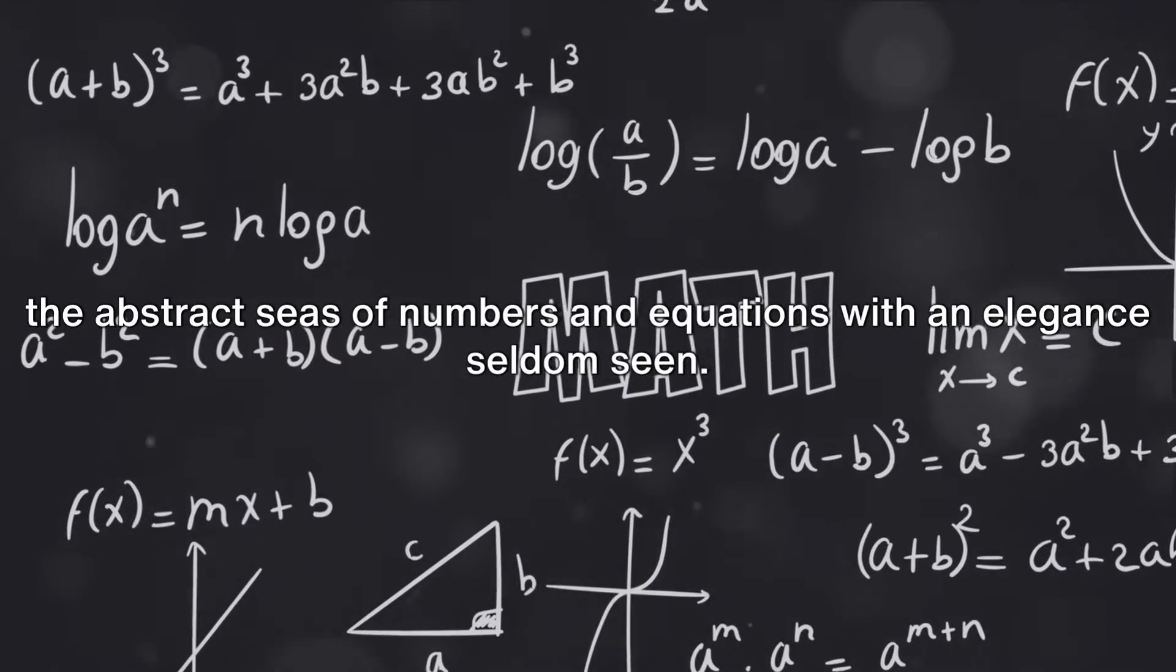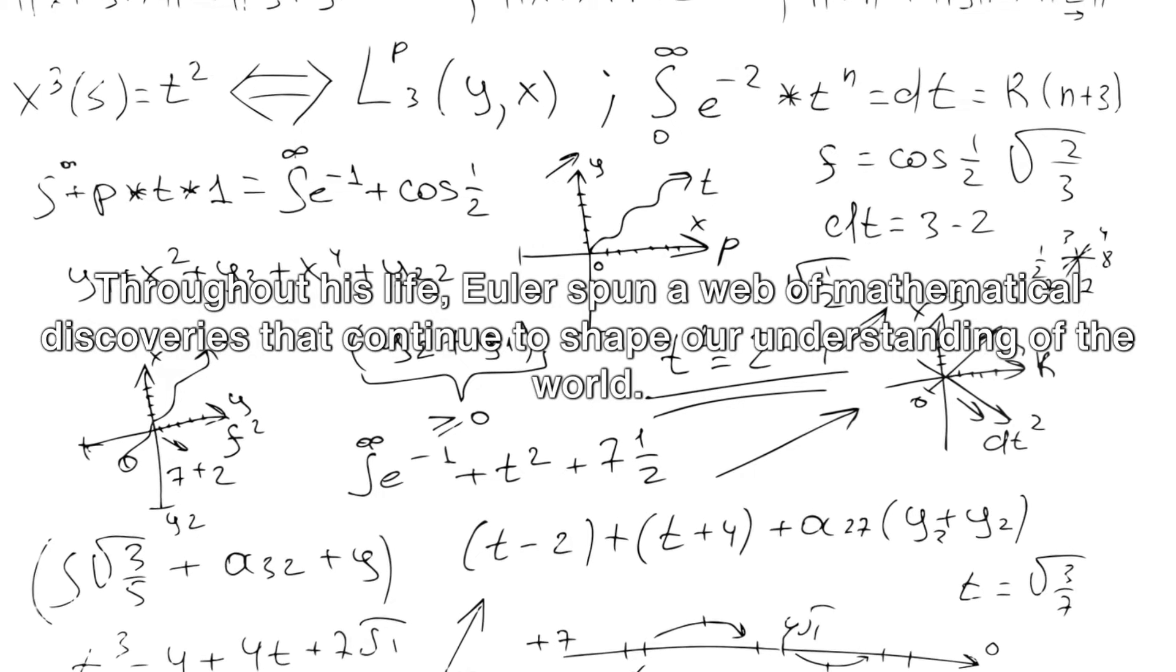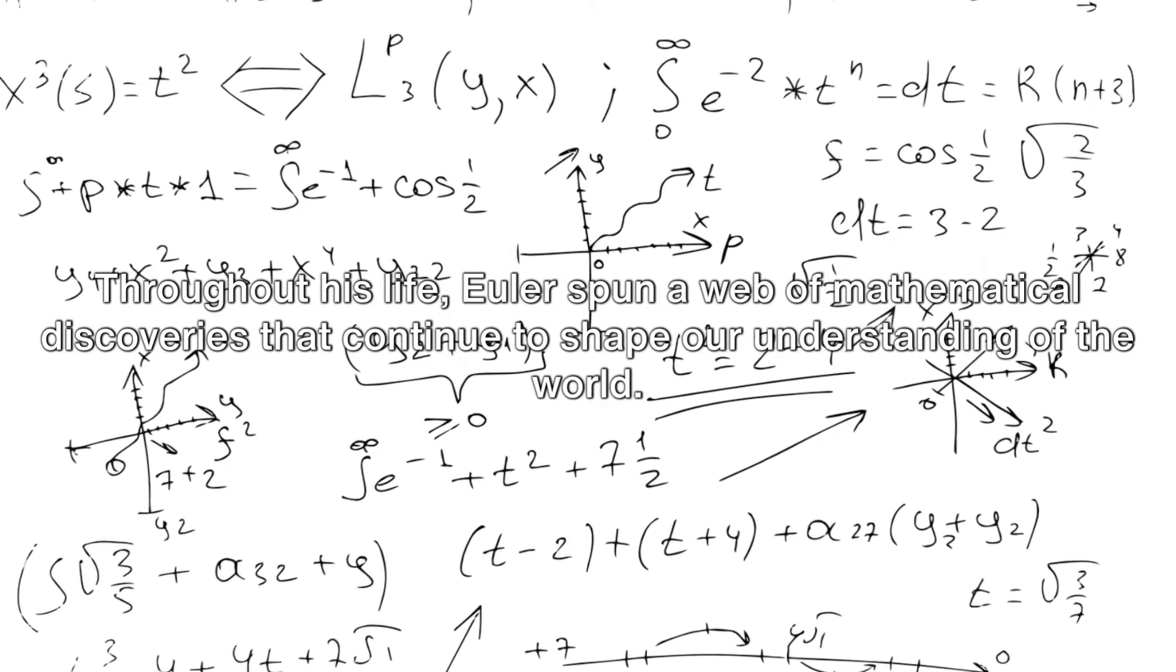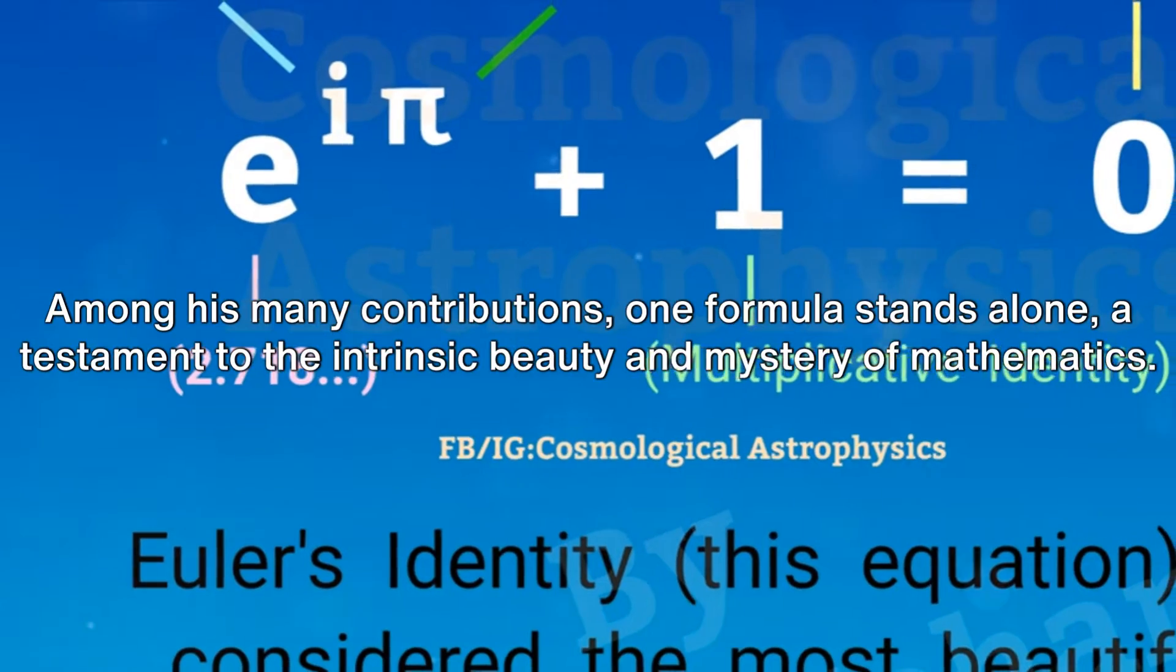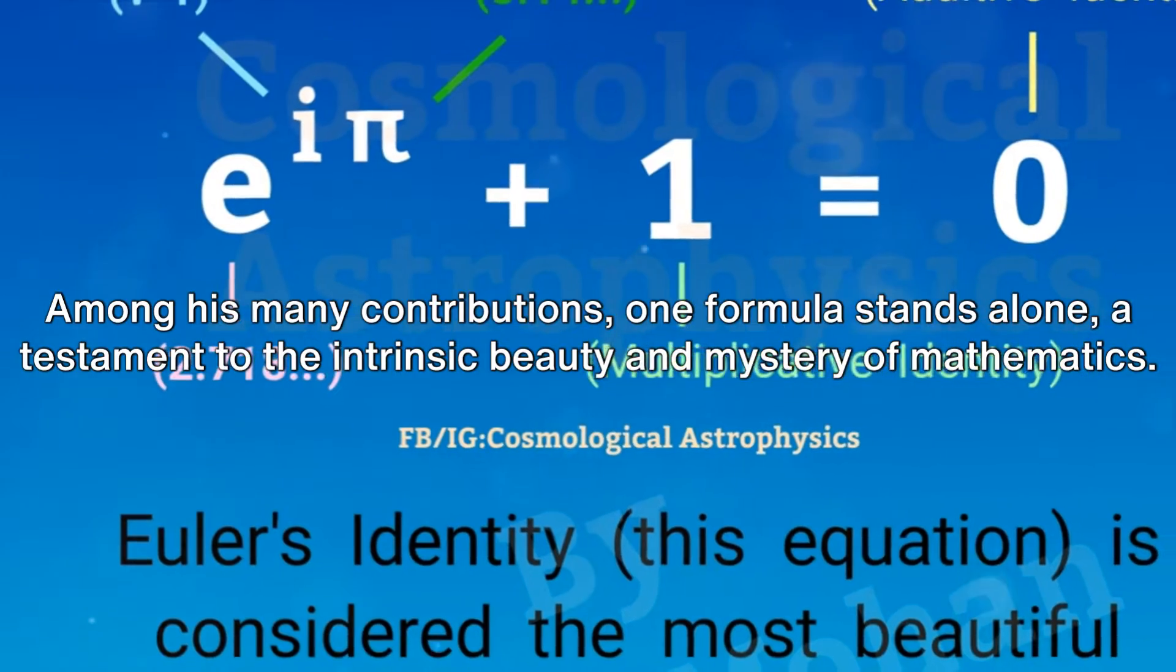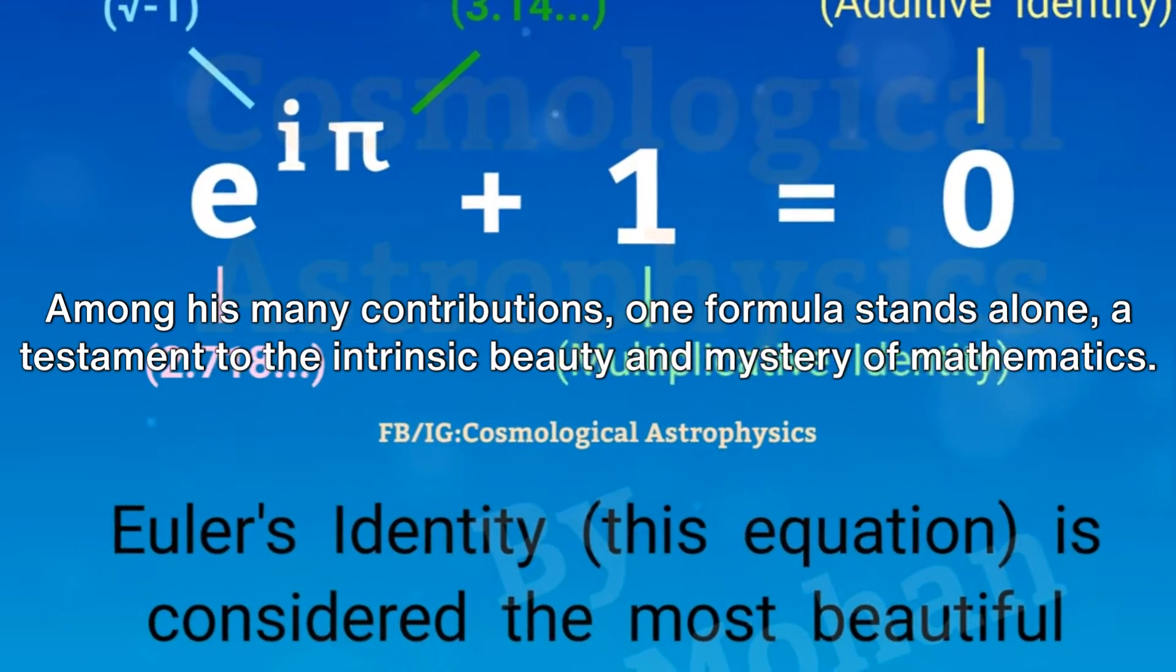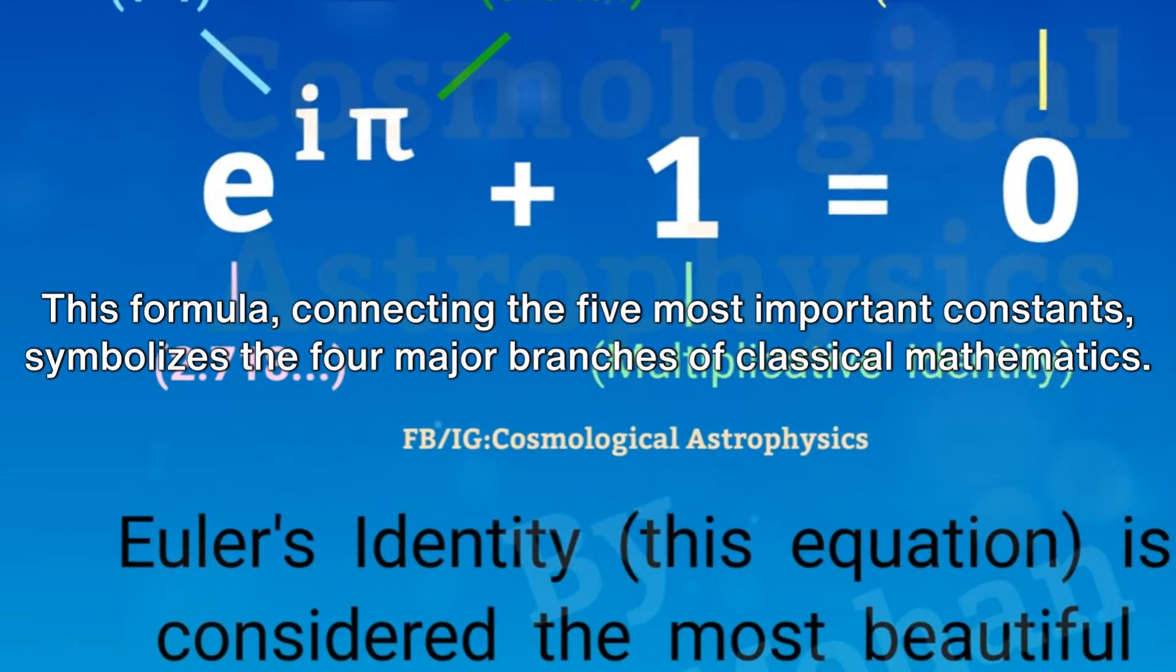Throughout his life, Euler spun a web of mathematical discoveries that continue to shape our understanding of the world. Among his many contributions, one formula stands alone, a testament to the intrinsic beauty and mystery of mathematics. This formula, connecting the five most important constants, symbolizes the four major branches of classical mathematics.